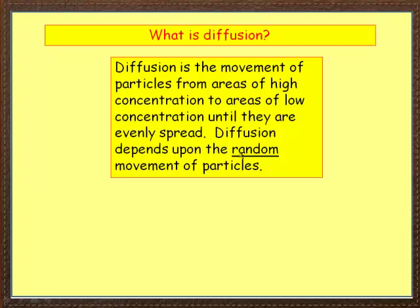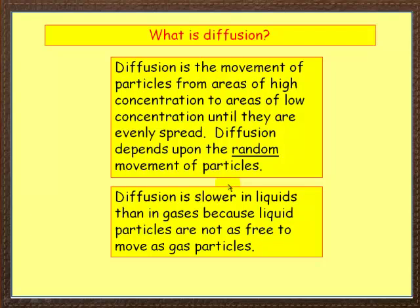Diffusion depends upon the random movement of particles. Particles are constantly moving, and because of that they diffuse. Diffusion is slower in liquids than in gases — in gases it happens very quickly, while in liquids it happens more slowly because liquid particles are not as free to move as gas particles. And in solids, diffusion happens very, very slowly, if at all.